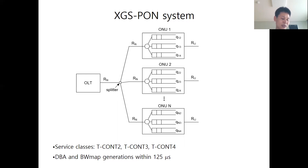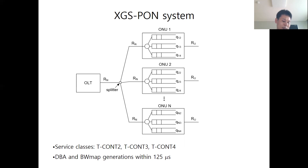The slide figure shows the XGS-PON system with T-CON types 2, 3, and 4. R-N is the uplink bandwidth of the ONU and R-U is the user input bandwidth of the ONU. A buffer Q-IJ of ONU indicates a buffer in which packets of T-CON type J in ONU I are stored. When transmitting a packet downlink from OLT to ONU, the packet is transmitted in a broadcasting manner through a splitter. The ONU receives a downlink packet and discards it if the packet's destination is not the ONU itself. When transmitting a packet from an ONU to the OLT, the uplink bandwidth R-N is shared by all ONUs.